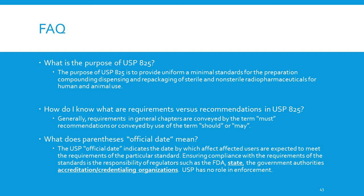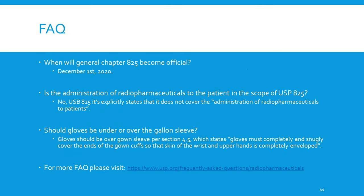What does 'official date' mean? The USP official date indicates the date by which affected users are expected to meet the requirements of the particular standard. Ensuring compliance is the responsibility of regulators such as the FDA, state government authorities, and accreditation and credentialing organizations — USP has no role in enforcement. General Chapter 825 became official December 1, 2020.